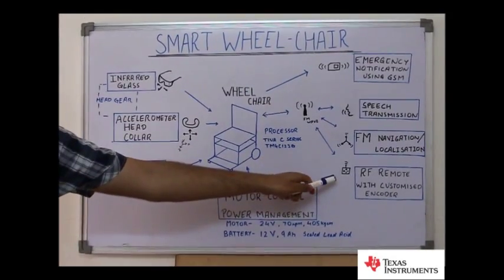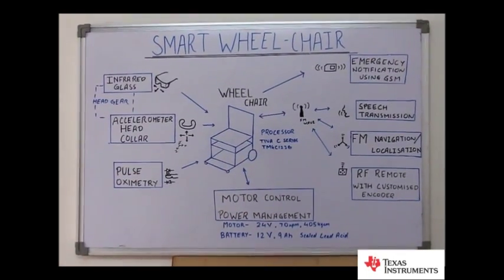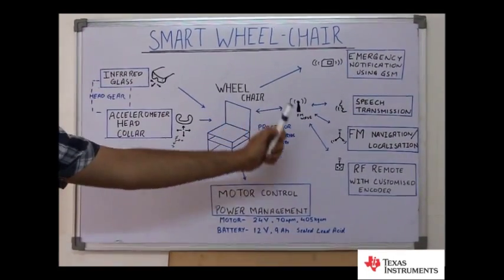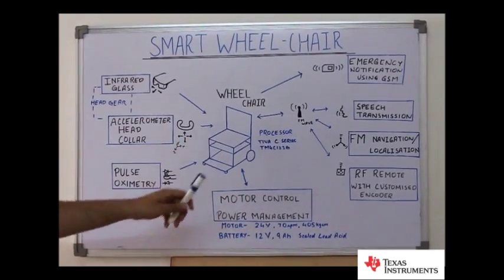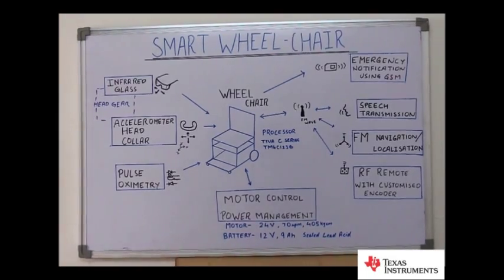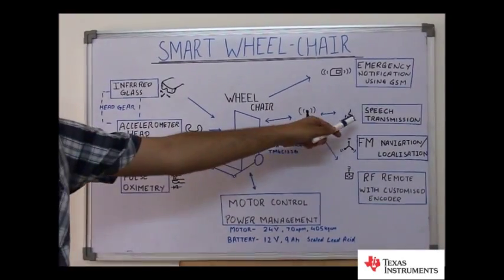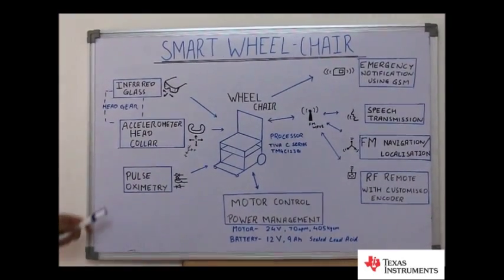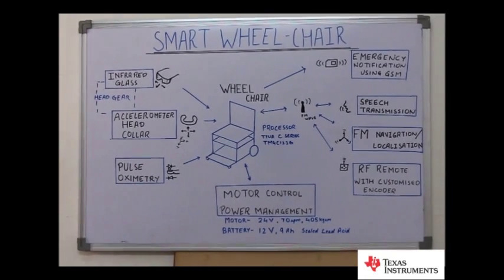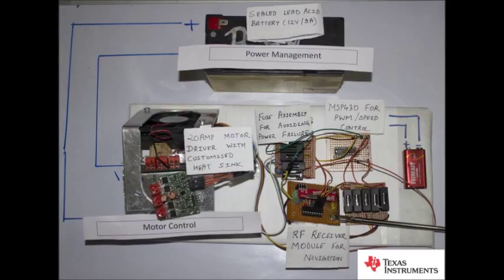There is also an RF remote, which we have customized using our own encoder for the navigation of the wheelchair. The wheelchair can also be sent to a specific coordinate in a defined space using FM navigation and localization. The patient can send speech commands in his vicinity using speech transmission. There is also pulse oximetry for measuring the heartbeat of the patient. The motor is controlled by a processor through a 20V 18A motor driver comprised of an H-bridge using MOSFETs.